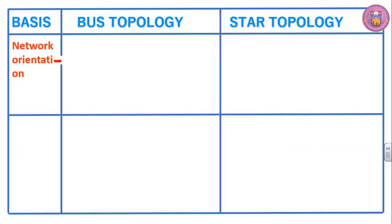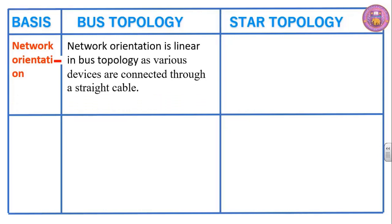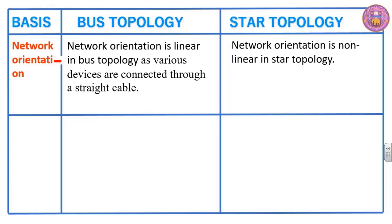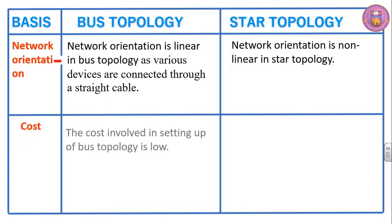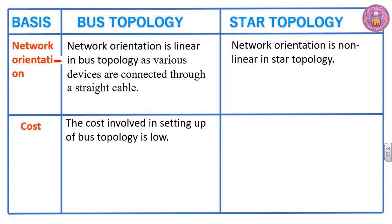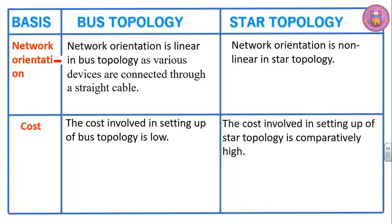Network orientation. Network orientation is linear in bus topology as various devices are connected through a straight cable. Network orientation is non-linear in star topology. As for cost, the cost involved in setting up bus topology is low, but the cost involved in setting up star topology is comparatively high.